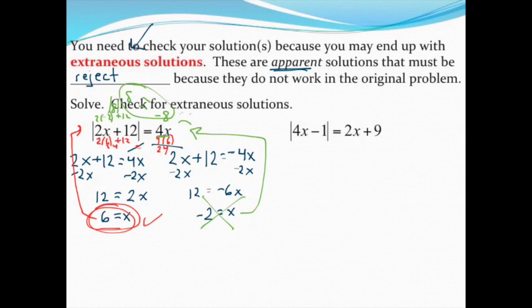I just want to get you started on this second problem before I have you try it on your own. Again, make sure absolute value bars are isolated. They are, so go ahead and split them. One of your equations is identical to the beginning, just drop the absolute value bars: 4x minus 1 equals 2x plus 9. For your bizarro equation, what's in the bars is still protected, anything outside the bars changes signs. In this case, everything outside changes signs, so it becomes not only negative 2x but also negative 9. Why don't you go ahead and try that problem from there.